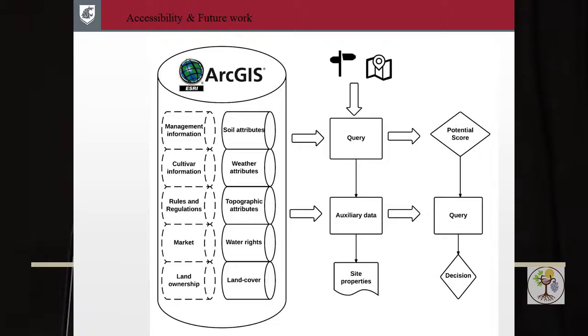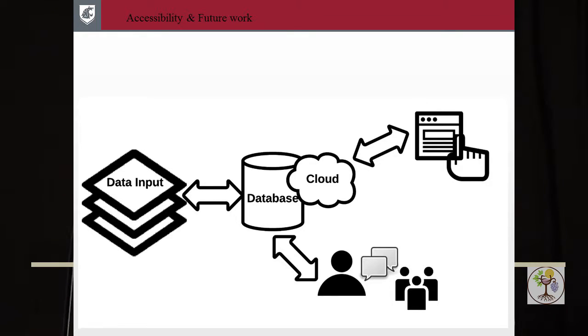So how can we use this database? Of course we can expand it, and later on it can be used for people who want to do queries on their site, know more about the properties of their land, and maybe make some decisions regarding what variety to plant, what they need to do, and what sort of management they might want to consider. It can be accessed through cloud services, probably a user interface or API, or it can be used through extension services — the people who are there to help growers. Depending on socioeconomic factors, you might want to consider different paths.